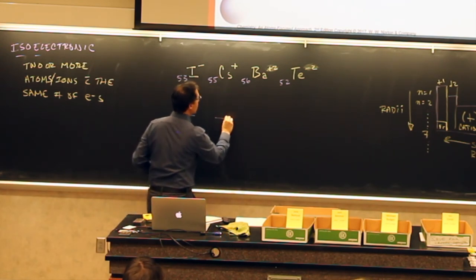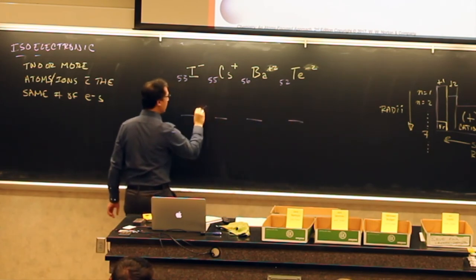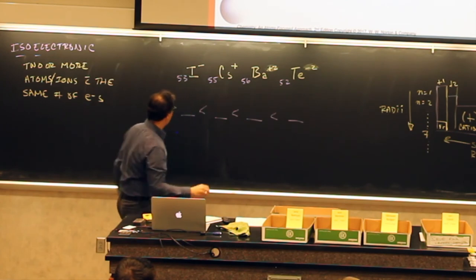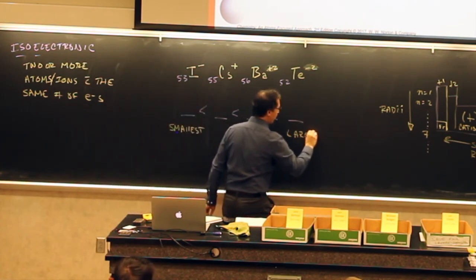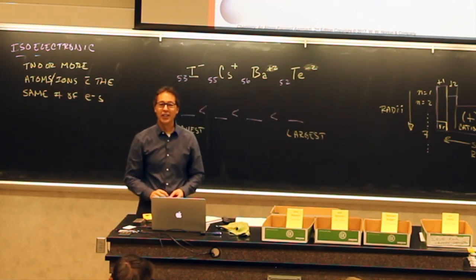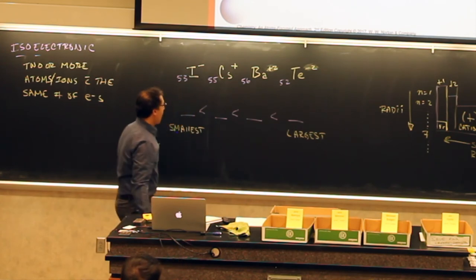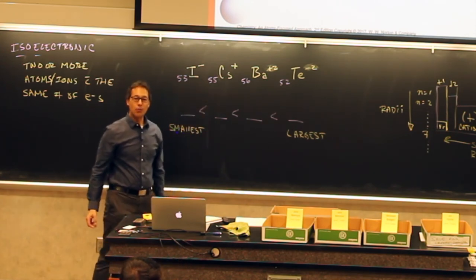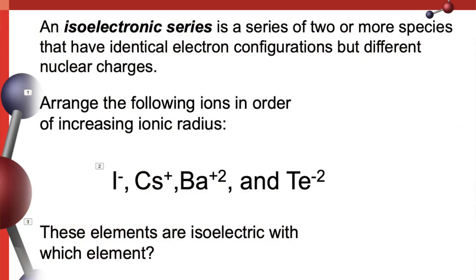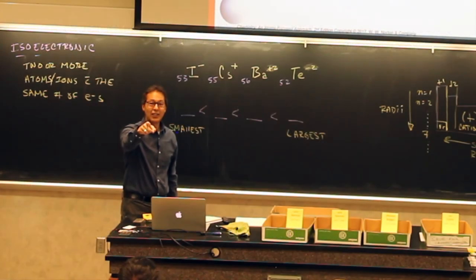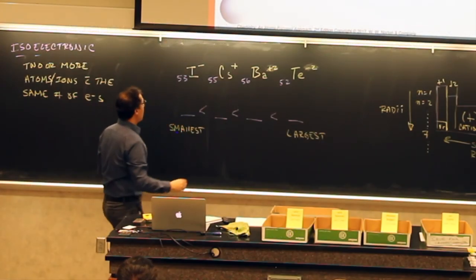I'm going to make some blanks here and label smallest and largest. Which one of these is the smallest? They're all isoelectronic with something. They all have the same number of electrons — let's figure out what element they're isoelectronic with. If iodine picks up one electron, it is isoelectronic with which element? They're isoelectronic with xenon.